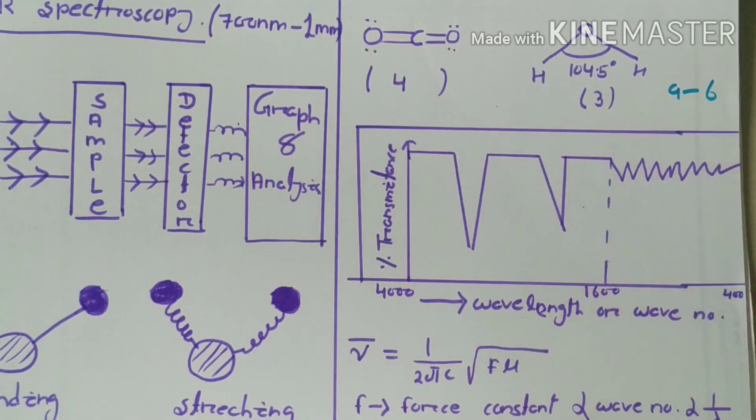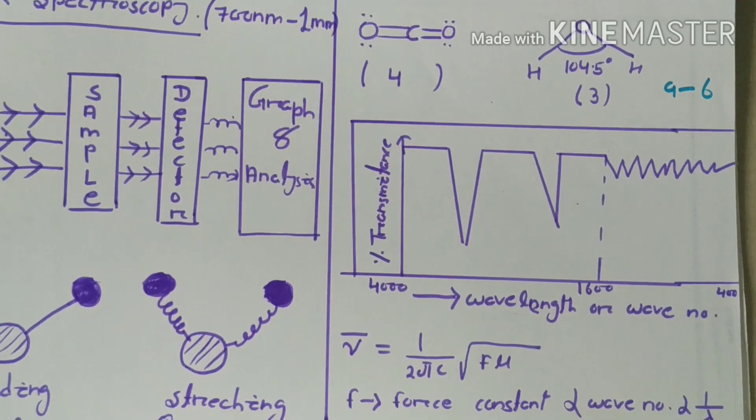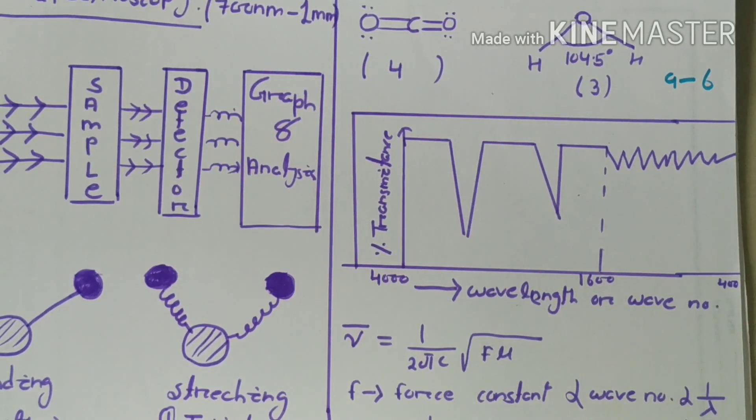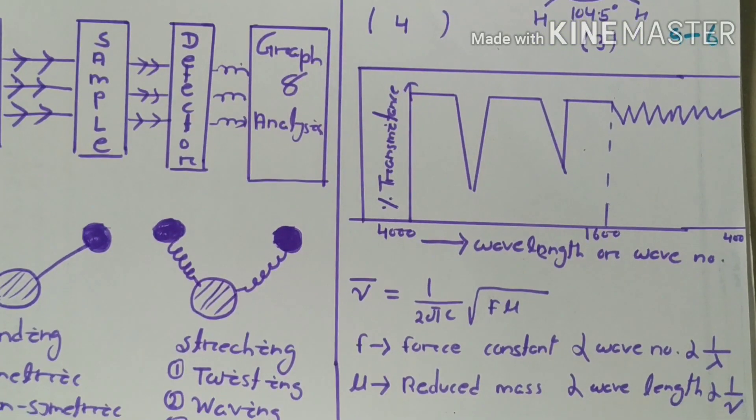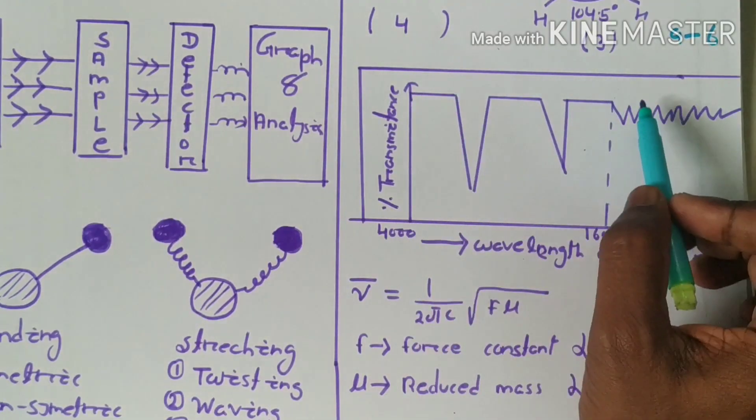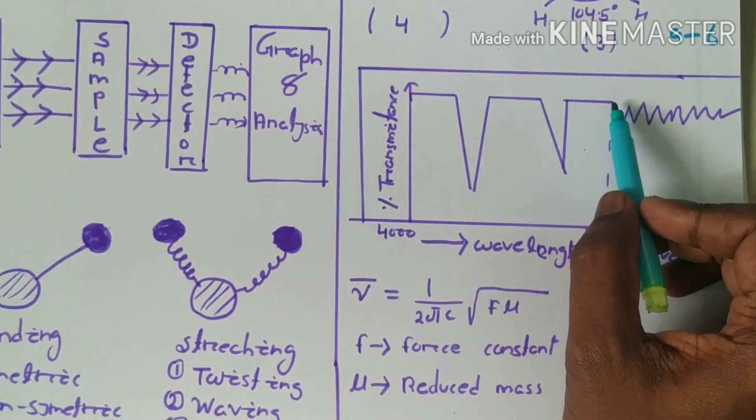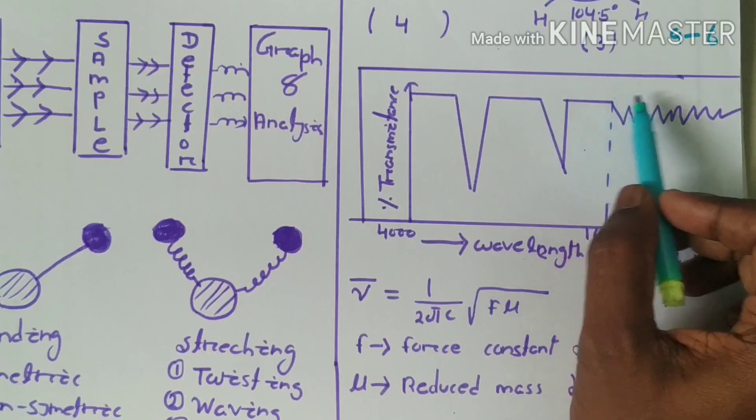Now let's see the graph of IR spectroscopy. The typical graph contains two regions. From this to this region it is known as the absorbance region, and from this region to this region is known as the fingerprint region.